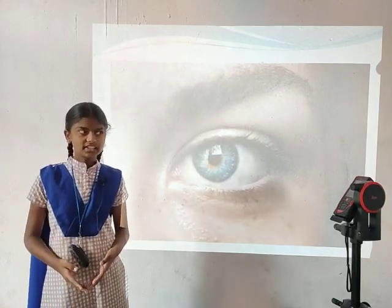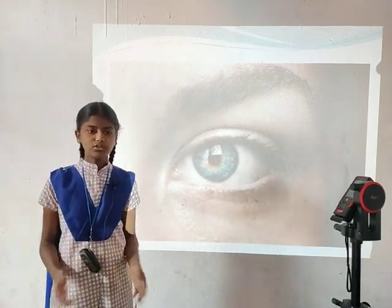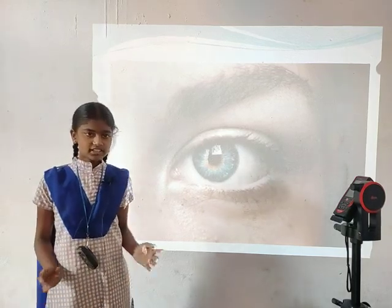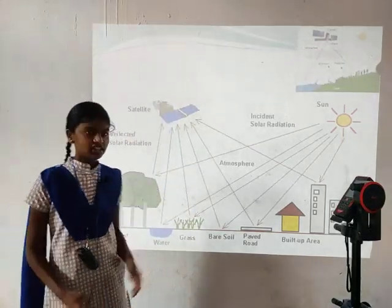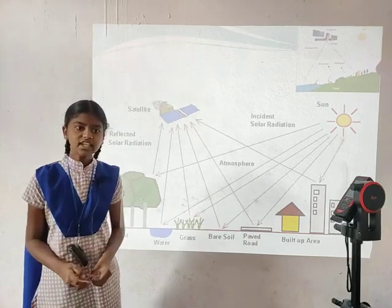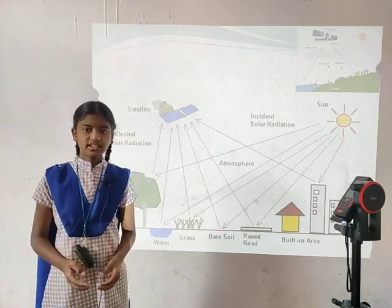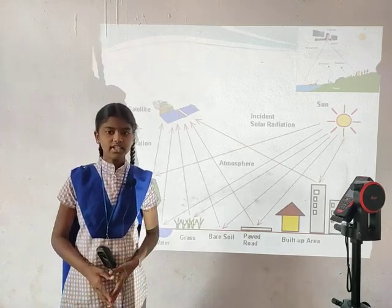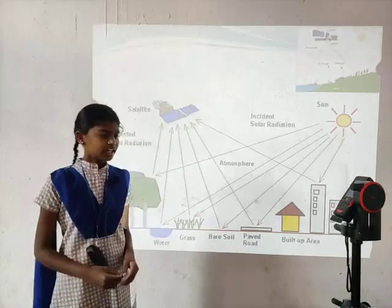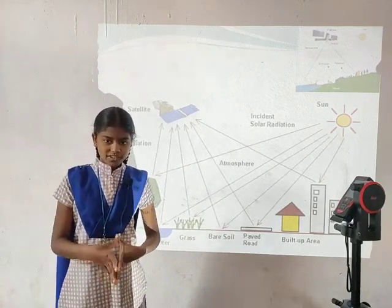These remotely collected data through various sensors may be analyzed to obtain information about the object or feature under investigation. In this course, we will deal with remote sensing through electromagnetic energy sensors only. Thus, remote sensing is the process of inferring surface parameters from measurement of the electromagnetic radiation from the Earth's surface. This EMR can either be reflected or emitted from the Earth's surface. Remote sensing involves detecting and measuring electromagnetic radiation reflected or emitted from distant objects made of various materials, so that we can identify and categorize these objects by class or substance to ensure the uniqueness of object or surface feature.